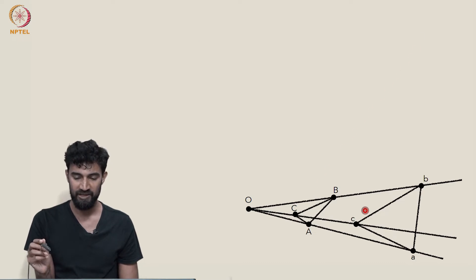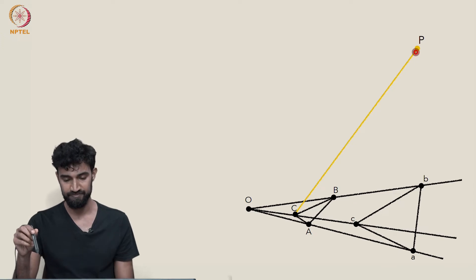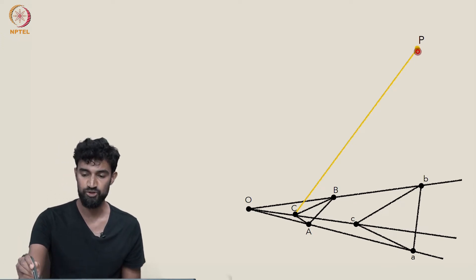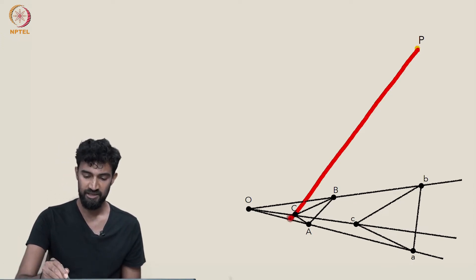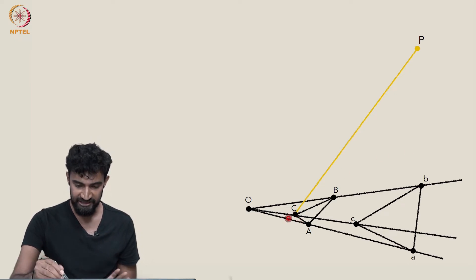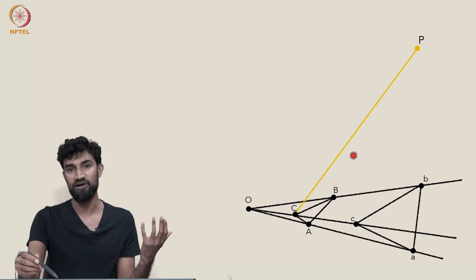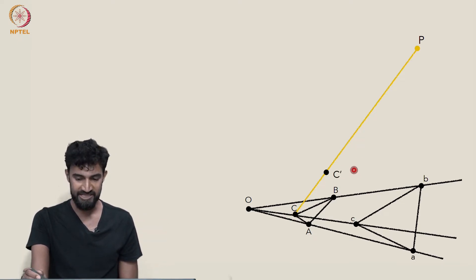So to do that, let's just pick any point P that's off of the ground plane. And we can drop a line from P to the point capital C, and let's just lift capital C along that line to some point C prime, somewhere on that line. It doesn't matter where.